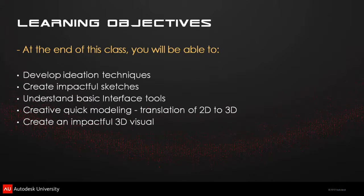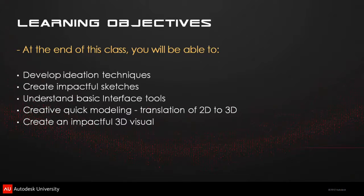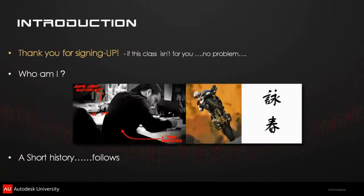We'll also understand the interface and create a quick 2D-to-3D model translation. I have prepared a design — I won't necessarily be modeling the full model, but I'll show some quick surfaces and key factors to translate a 2D sketch into 3D. At the end, an impactful 3D visual. If this class isn't for you, you can leave now — I've been told that's a really good thing to say.